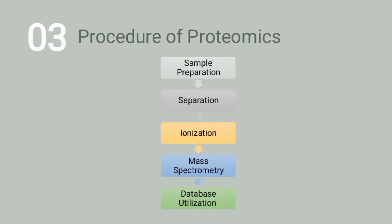The procedure of proteomics begins with sample preparation. Samples can include serum albumin, hair, or any part of a cell where proteins are present. Proteins are separated from the cell using centrifugation techniques such as density gradient centrifugation. Since proteins are macromolecules, they may settle as a pellet while other cell organelles remain in the supernatant.